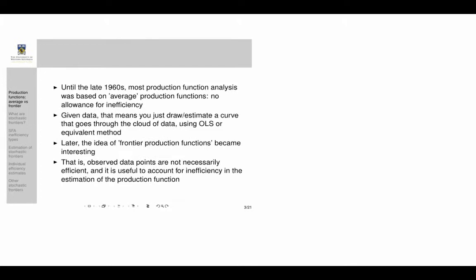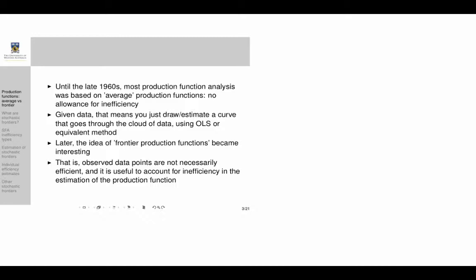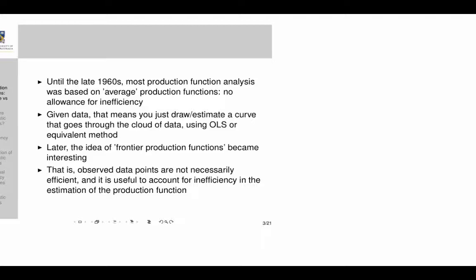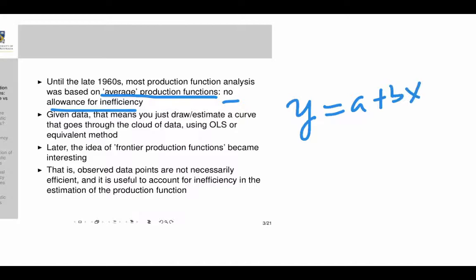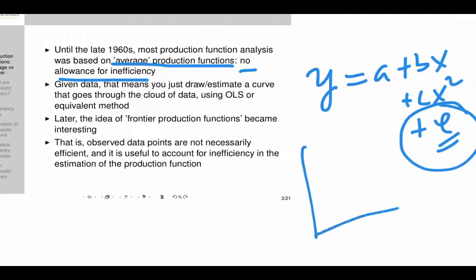Until the late 1960s, most production function analysis was based on the normal production function, or what we will call for clarity an average production function. There was no allowance for inefficiency. When you estimated a production function, you specified the function and estimated it with a normal symmetric error — as in ordinary least squares — capturing noise and measurement errors. The function went through the cloud of data, which is why we call it an average production function.